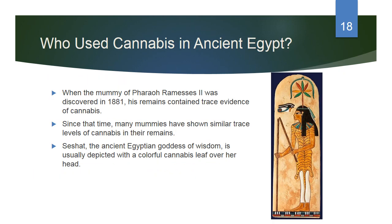When the mummy of Pharaoh Ramses II was discovered in 1881, his remains contained trace evidence of cannabis. Since that time, many mummies have shown similar trace levels of cannabis. Seshhat, the ancient goddess of wisdom, is usually depicted with a cannabis leaf over her head. Those who used cannabis were at the very top echelon of society, and since it also manifested in the gods, it was probably fairly prevalent among the general population.